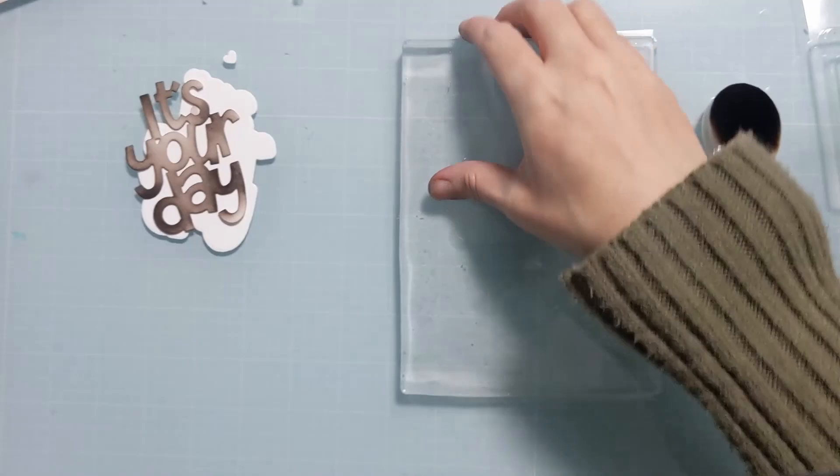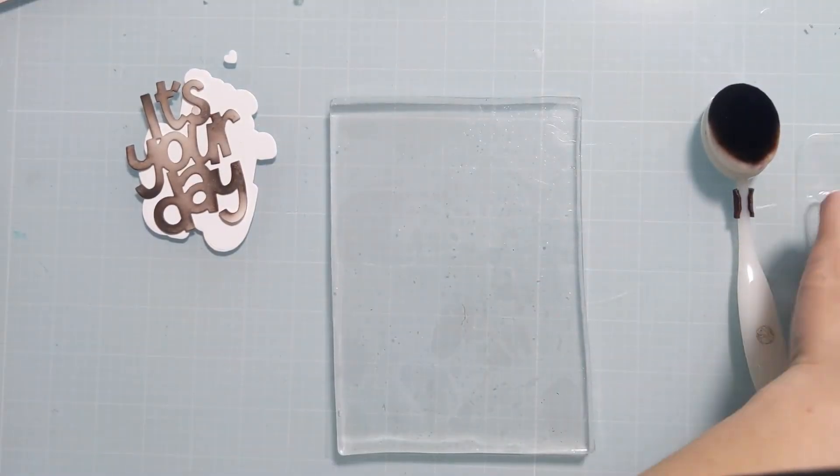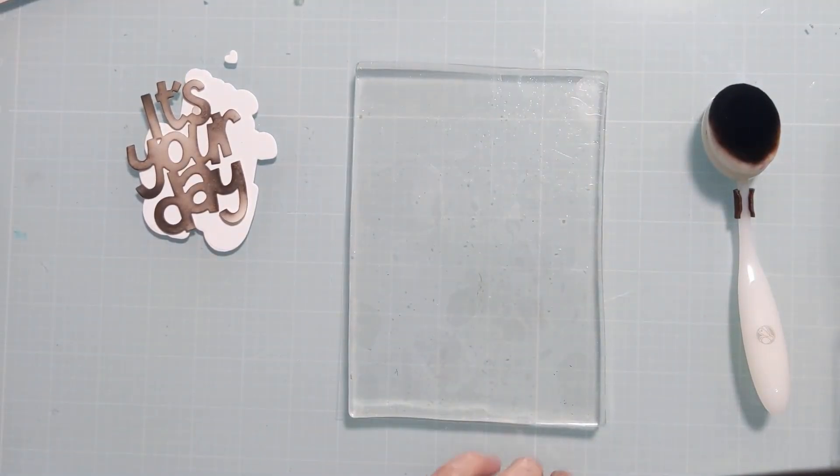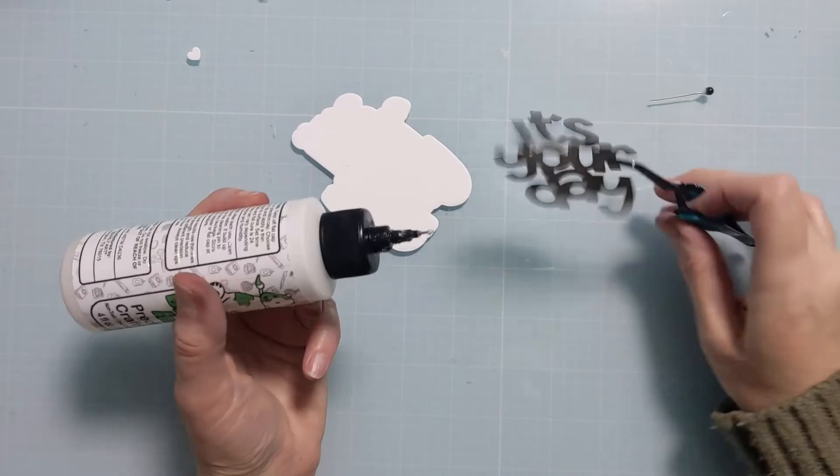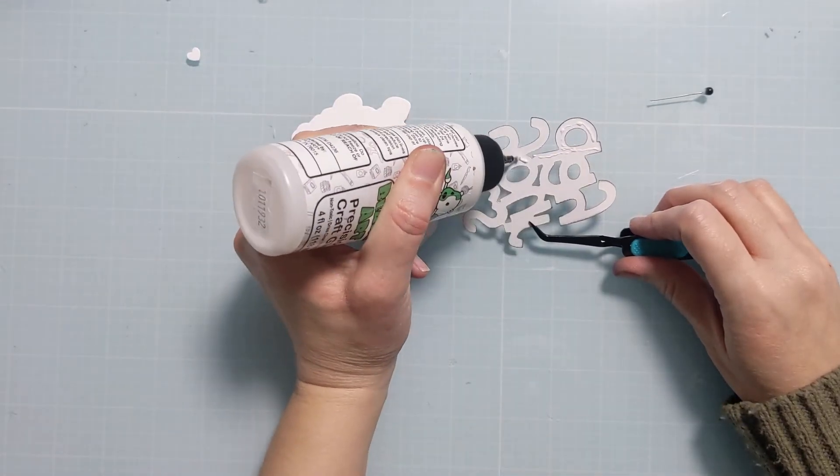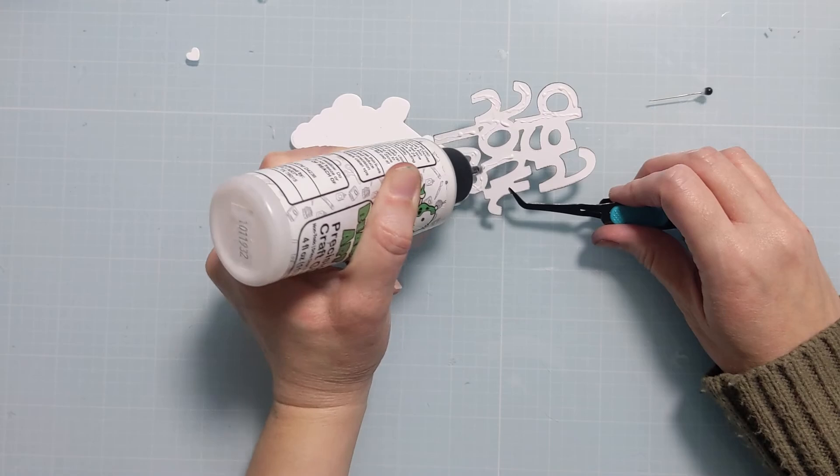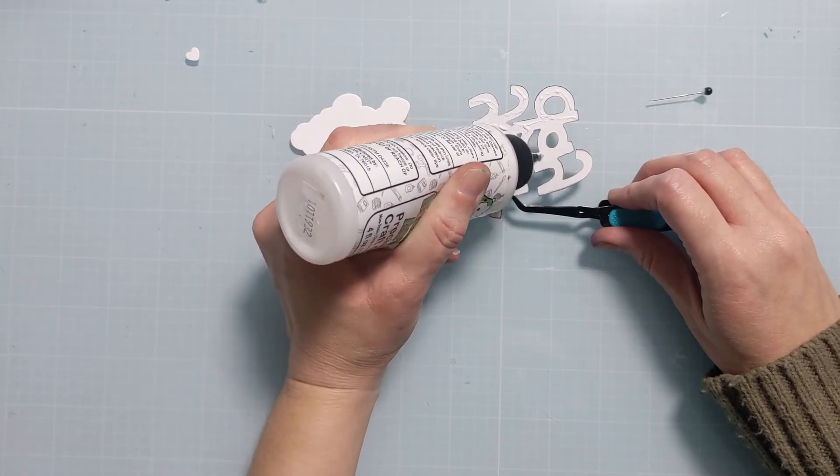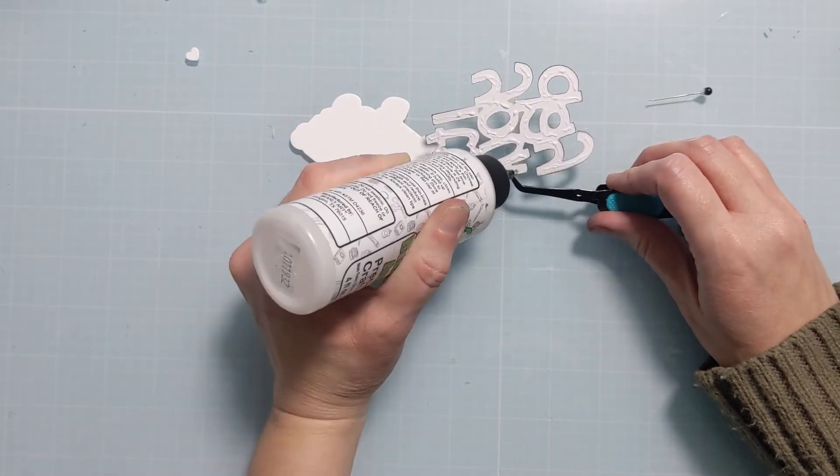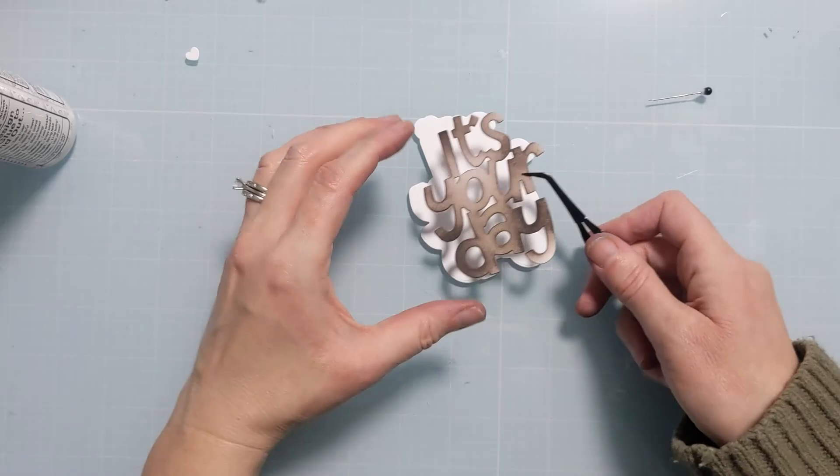I'm going to set that aside and then use some liquid glue to attach this to the base layer. I have some Barely Arts liquid glue and I have my tweezers here just kind of hanging on to it for me. Then I'll be able to line it up perfectly on this white shadow layer.